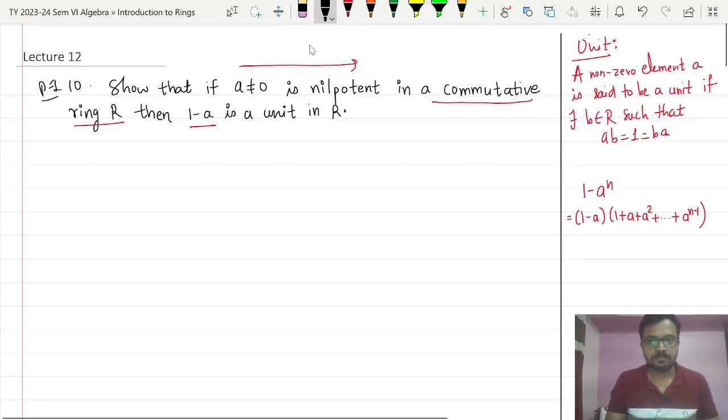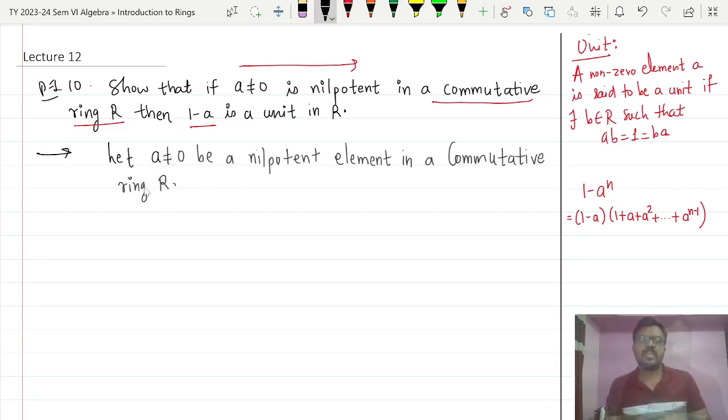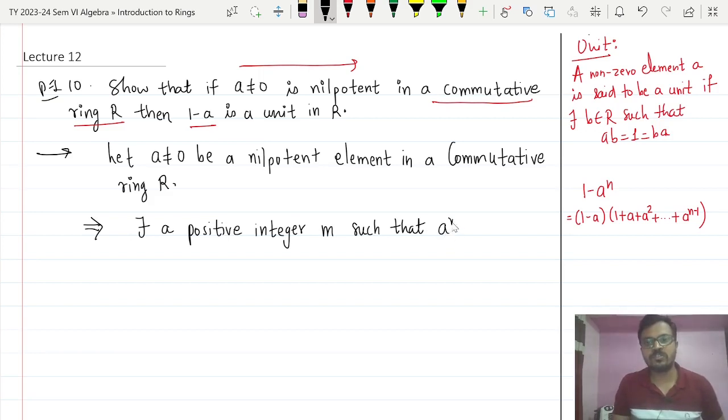Now let us start. I will say let a not equal to 0 be a nilpotent element in a commutative ring R. What does it imply? Remember the definition of nilpotent. This will imply there exists a positive integer m such that a raised to m is actually equal to 0.